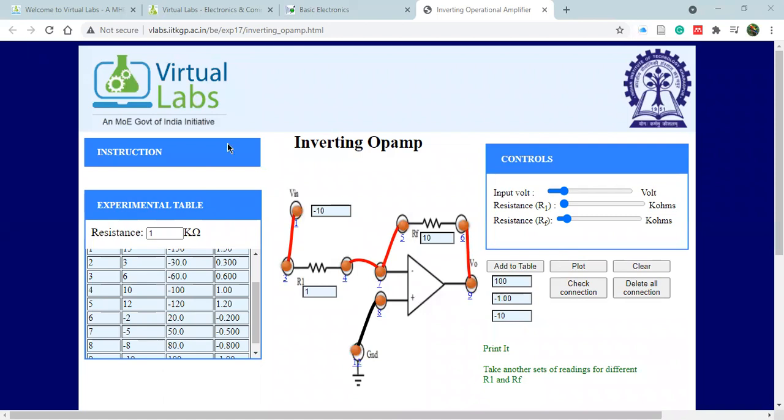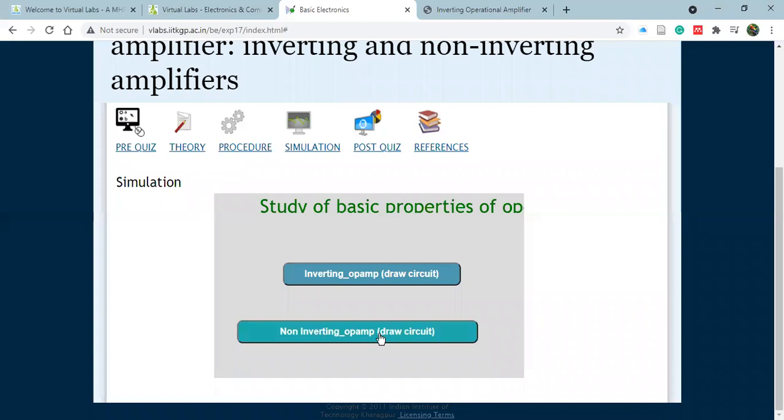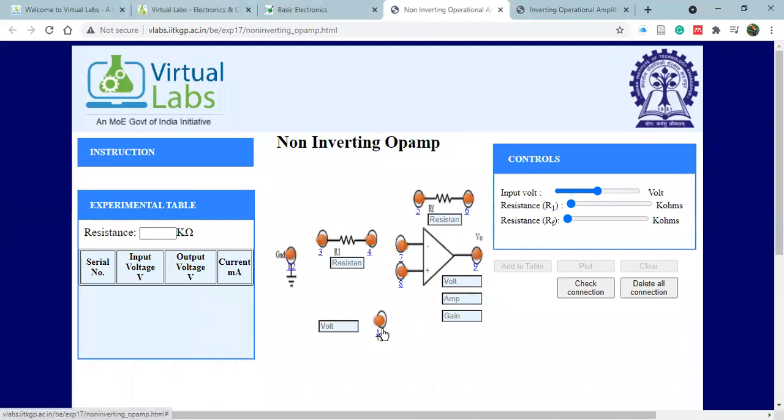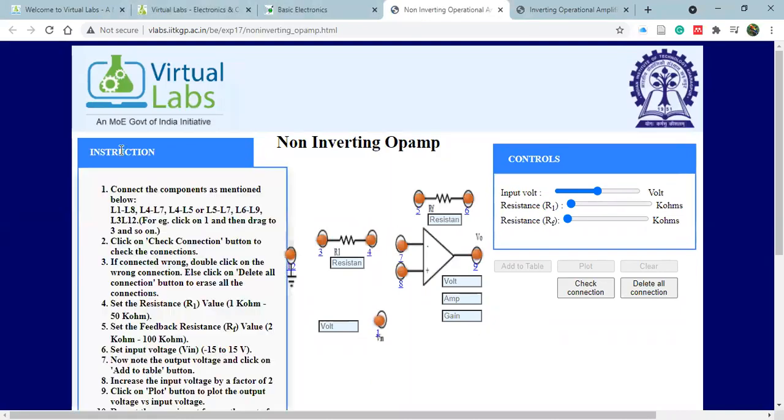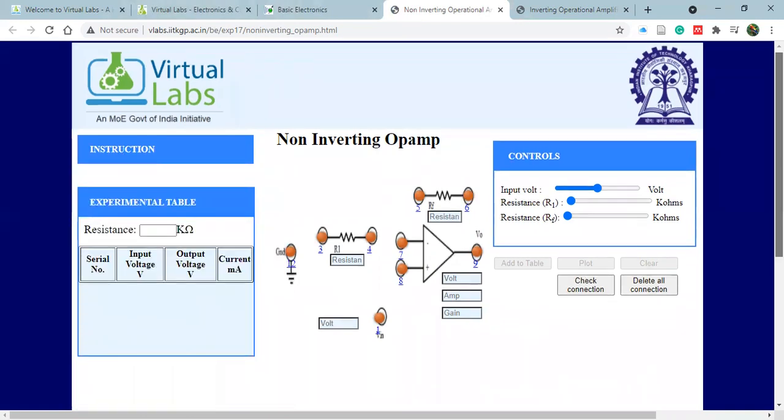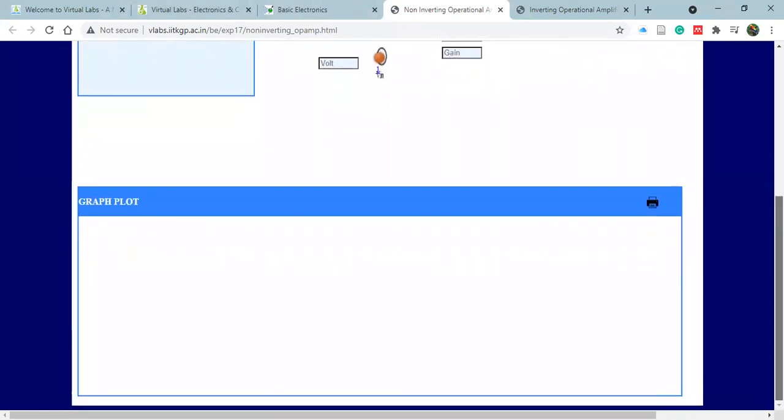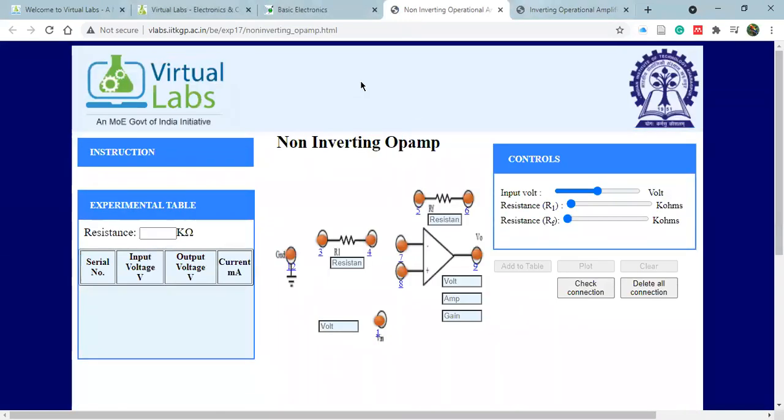So in the same way, if I go back to this section and now we will do non-inverting operational amplifier. So again, the circuit is given, the experimental table. You have the instructions over here and you have all the controls to control the variables and you have the graphical section. Similarly, you can do the experiment as you have done just now in case of inverting op amp. So let us begin our connection now.